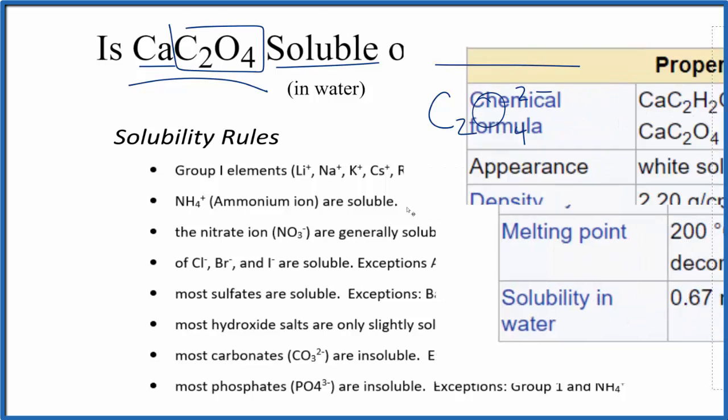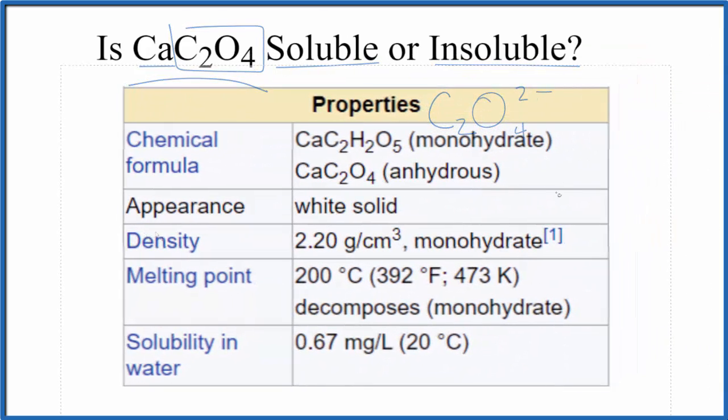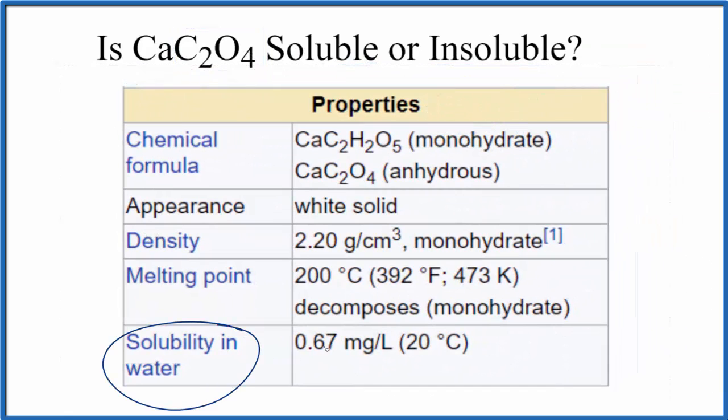If we look up the solubility of calcium oxalate, we can see the solubility is 0.67 milligrams per liter. This is really small because we're not talking about grams here, we're talking about milligrams. There are a thousand milligrams in one gram, so just a little bit of this calcium oxalate will dissolve in water—most of it will remain a solid. That's important.